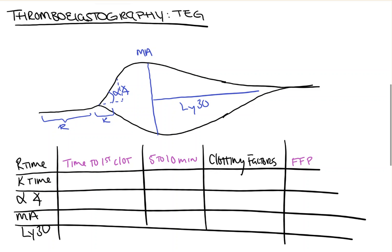Next, we have our K time. And this is the time until the clot reaches a certain level of strength, 20 millimeters. A normal time, 1 to 3 minutes. And this stage is dependent on fibrinogen. Because as the strength of the clot improves, as it gets stronger, it's because that fibrin bridge is forming. And so, a prolonged K time means that you're having trouble reaching this certain clot strength, and it should be treated with cryoprecipitate, because cryo has most of our fibrinogen.